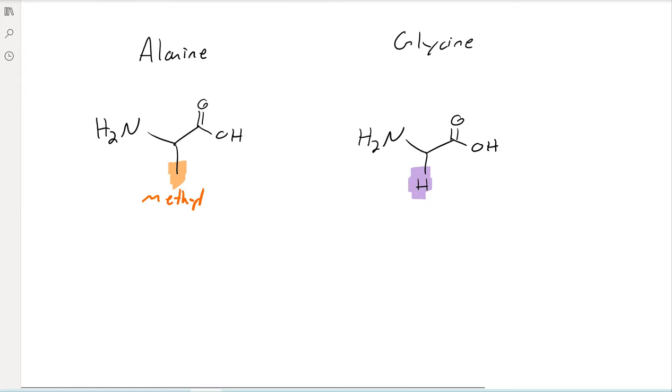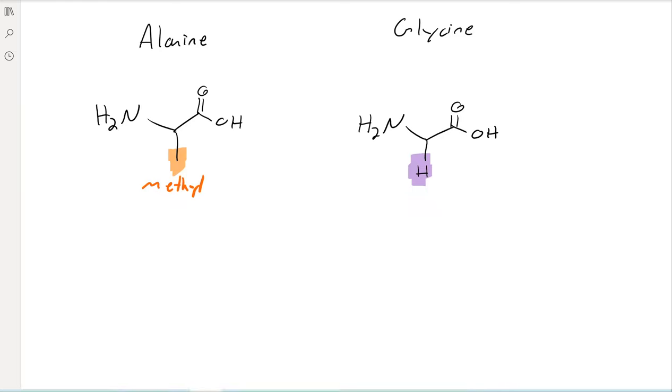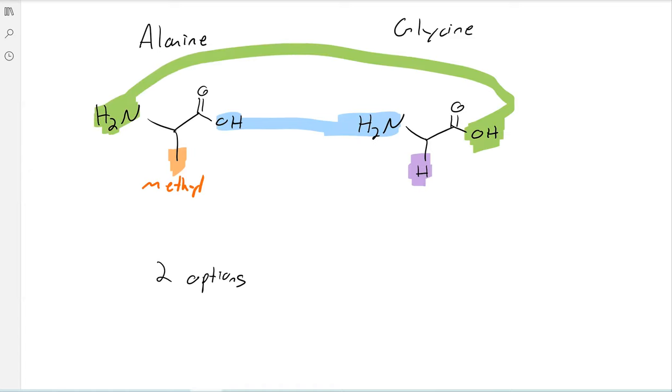And then we think about combining them in order to form a peptide. We've got two main options. So either this carboxylic acid can condense with this amine, or this amine can condense with this carboxylic acid.